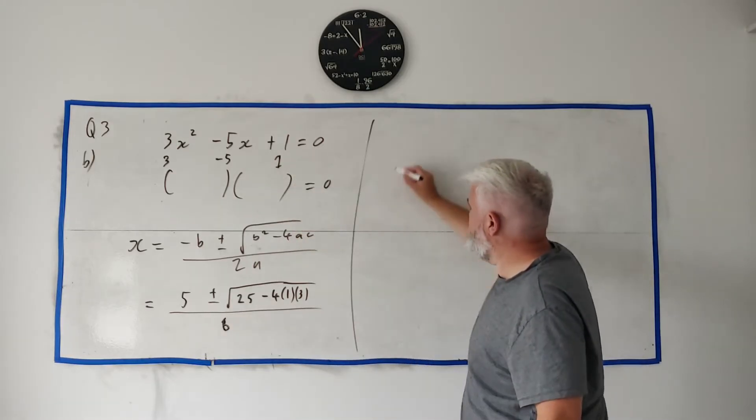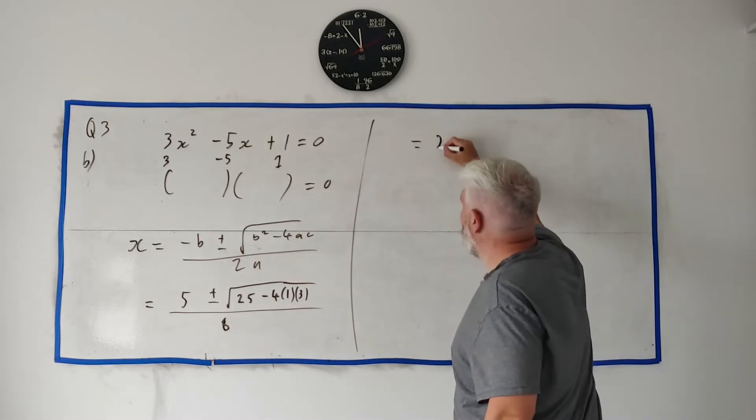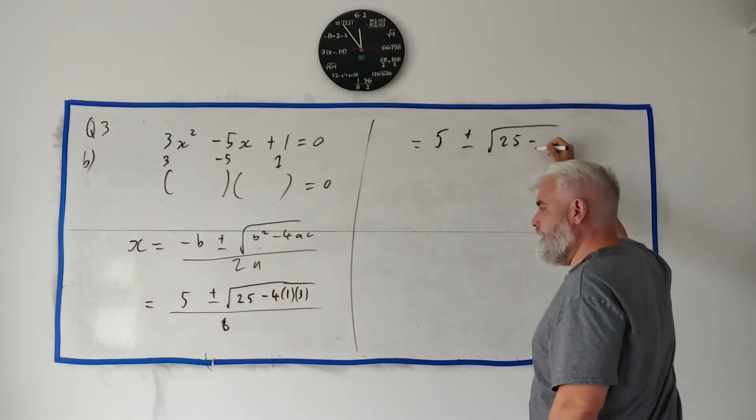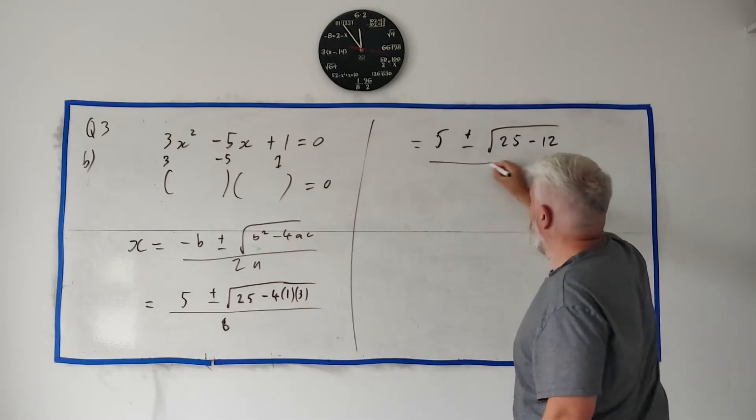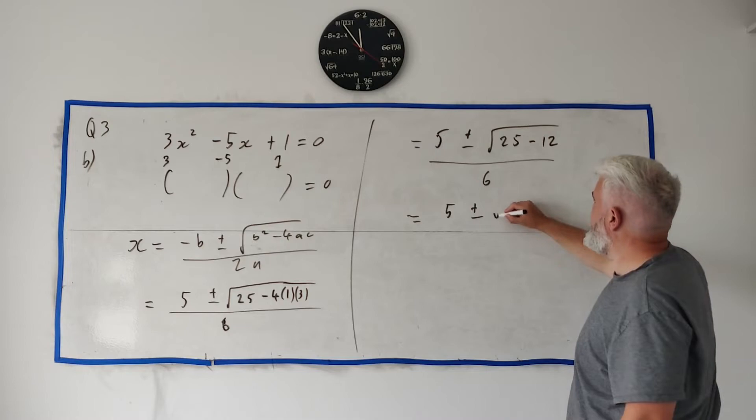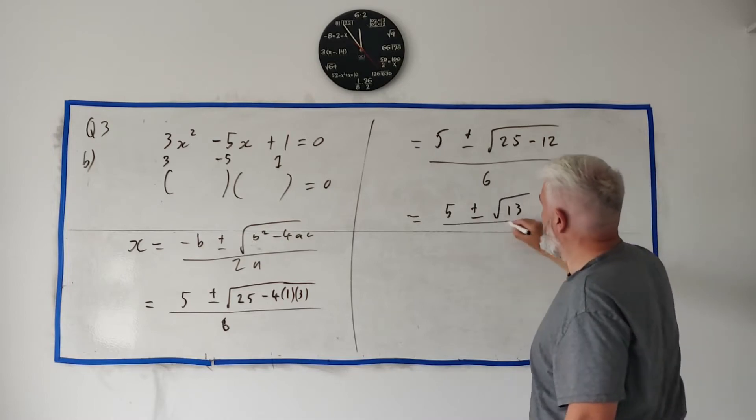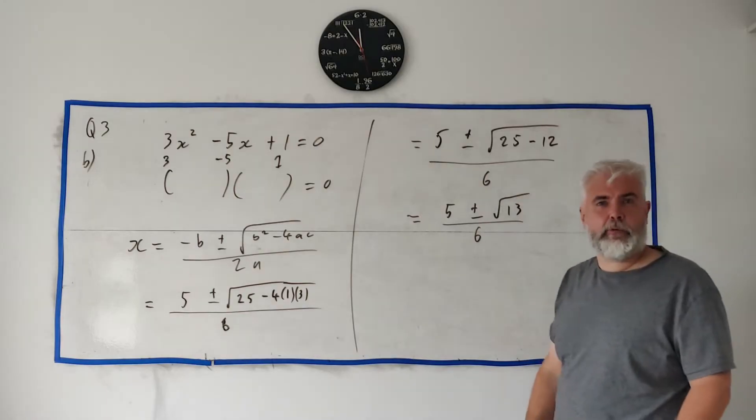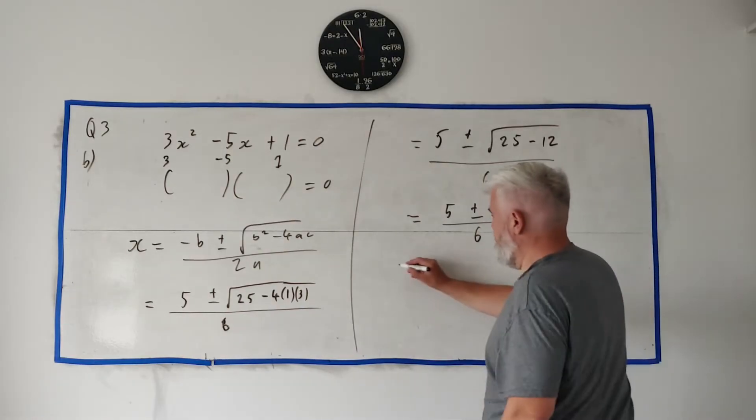That's minus 5. Minus minus 5 is just 5. Plus or minus square root. Minus 5 squared, 2 minuses make a plus makes 25. Minus 4 times 1 times 3. And all that's divided by 2 times 3, which is just 6. Now let's clean this up. We get 5 plus or minus the square root of 25 minus 12 over 6. Again 5 plus or minus square root of 13 over 6. And that's nearly our answer. Except they want decimal places.